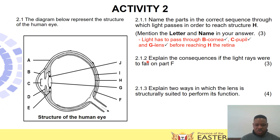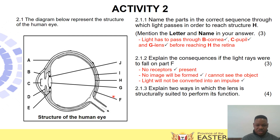Question 2.1.2 asks to explain the consequences if light rays were to fall on part F — that is the blind spot, where neurons unite to form the optic nerve. There are no photoreceptors there, so no image can form and you will not be able to see. Light falling on the blind spot will not be converted into an impulse.